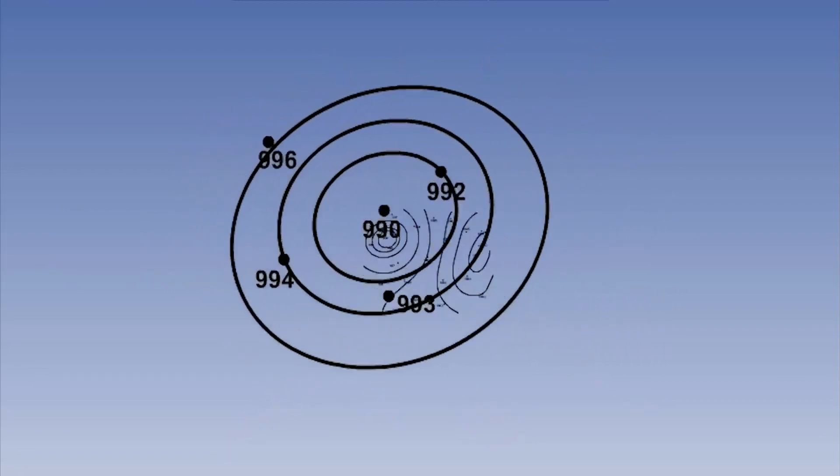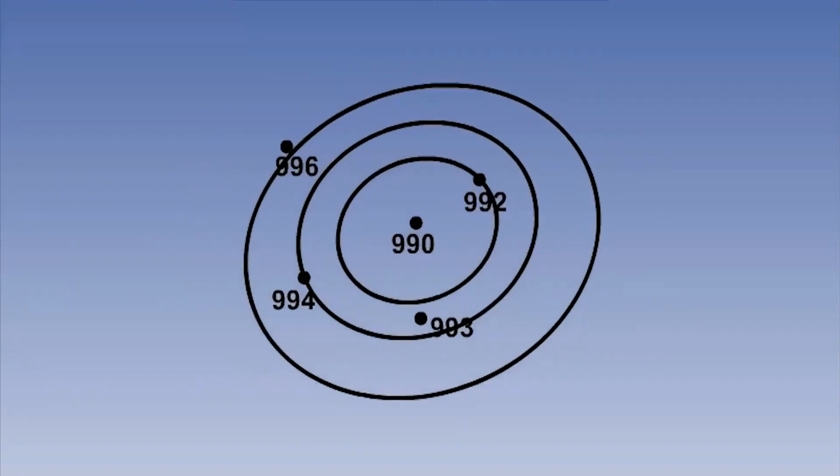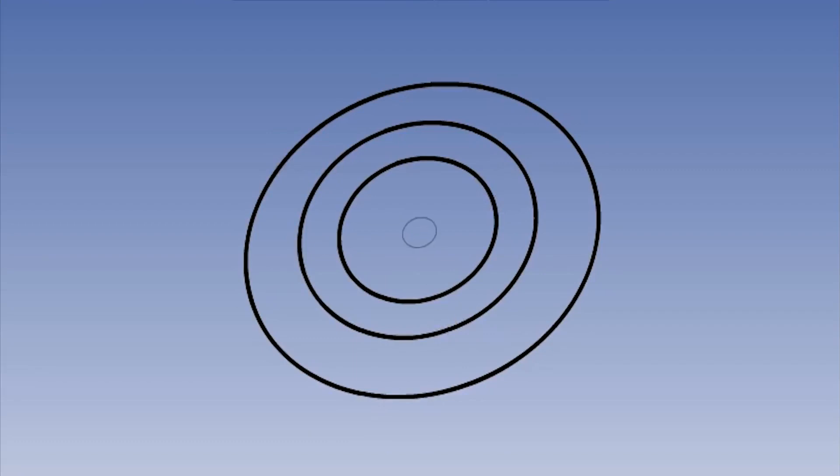By watching the isobars change shape over time, we can see how these systems behave. If they were to intensify or deepen, we would see new concentric, lower value isobars appearing within the central part of the depression. If the isobars move outwards from the centre, then the depression is growing outwards and covering a wider area.